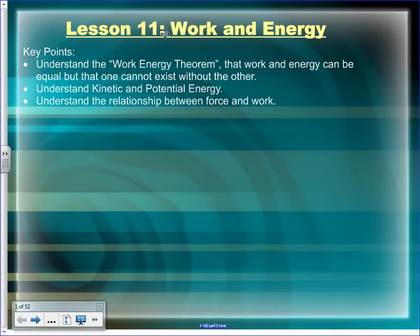In order to have energy, you have to get that energy from somewhere. Here's where this becomes more of a chemistry and biology thing. Where do we get our energy from? Food. Food is chemical energy. We convert that chemical energy into various forms, which can then be used to do mechanical work. Our muscles convert that into mechanical energy, and we're able to do work.